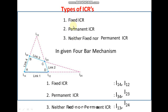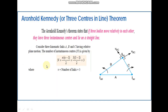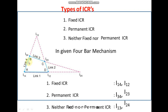There are three types of ICR: fixed ICR, permanent ICR, and neither fixed nor permanent ICR. We will see how to locate these ICRs — that is, how to find fixed, permanent, and neither fixed nor permanent ICRs in a mechanism. Given a four-bar mechanism diagram with four links labeled one, two, three, and four, we will now see how these ICRs are identified.